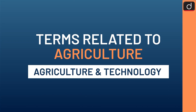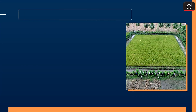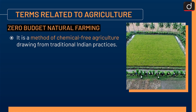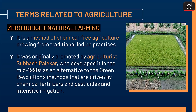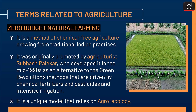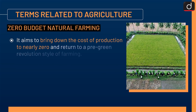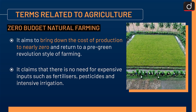Now let's discuss terms related to agriculture. Zero Budget Natural Farming is a method of chemical-free agriculture drawing from traditional Indian practices. It was originally promoted by agriculturalist Subhash Palekar, who developed it in the mid-1990s as an alternative to the Green Revolution's methods driven by chemical fertilizers, pesticides, and intensive irrigation. It is a unique model that relies on agroecology and claims there is no need for expensive inputs such as fertilizers, pesticides, and intensive irrigation.